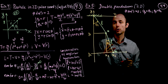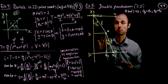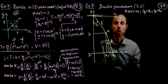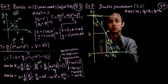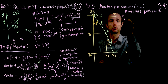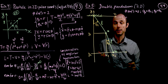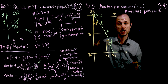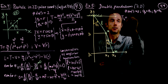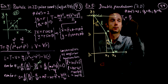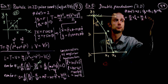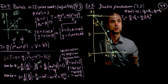To compute the Lagrangian we need the kinetic energy. The kinetic energy of the first mass T1 is exactly the same as for a single-arm pendulum.